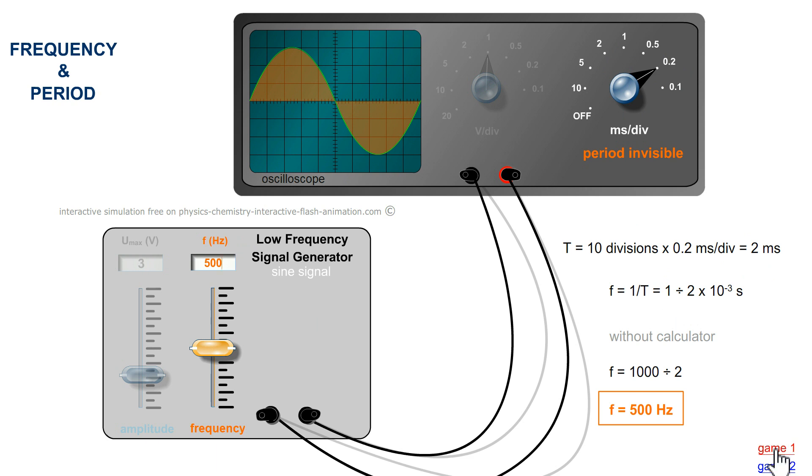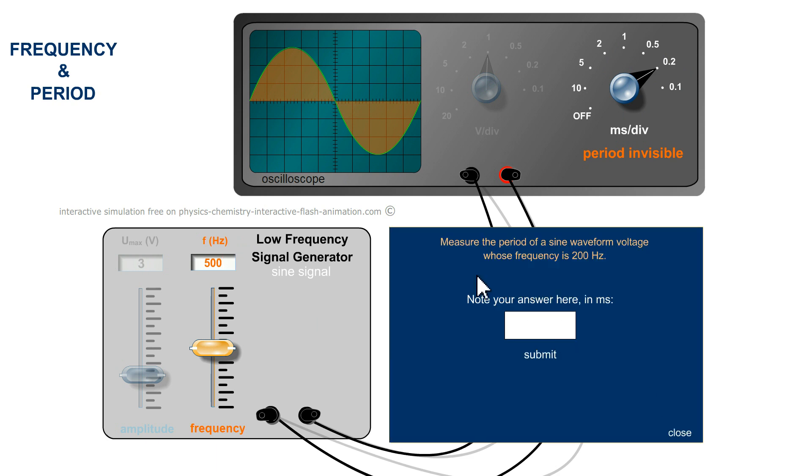We are going to train here. Measure the period of an alternating voltage whose frequency is 200 hertz. So 200 hertz is there. The selection here is poorly chosen. I have to adapt the sensitivity. There. I fall on 0.5. I'll give you 20 seconds. I will answer after.